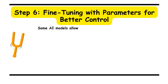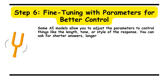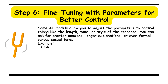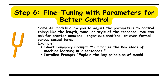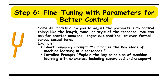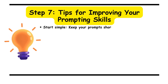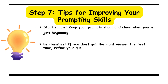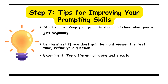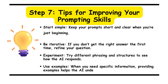Step 6: fine-tuning with parameters for better control. Some AI models allow you to adjust parameters to control things like the length, tone, or style of the response. You can ask for shorter answers, longer explanations, or even formal versus casual tones. For example, a short summary prompt: 'Summarize the key ideas of machine learning in two sentences.' A detailed prompt: 'Explain the key principles of machine learning with examples, including supervised and unsupervised learning, in 200 words.' These parameters give you more control over the output, ensuring it meets your specific needs. Step 7: tips for improving your prompting skills — start simple, keep your prompts short and clear when beginning; be iterative, refine your question if you don't get the right answer the first time; experiment with different phrasing and structures; and use examples to help the AI understand context when you need specific information.